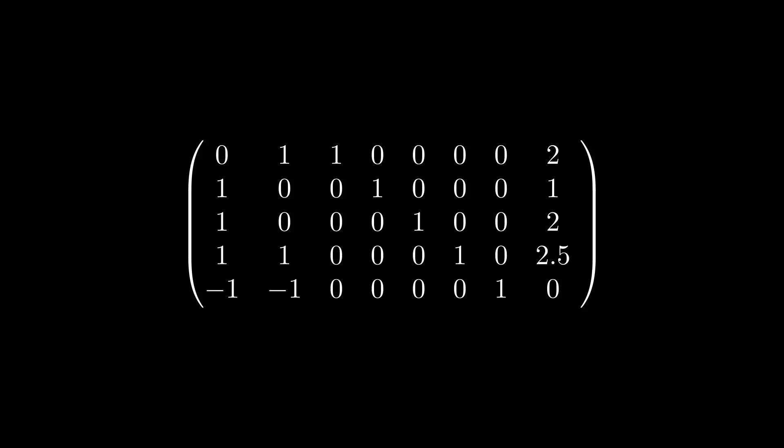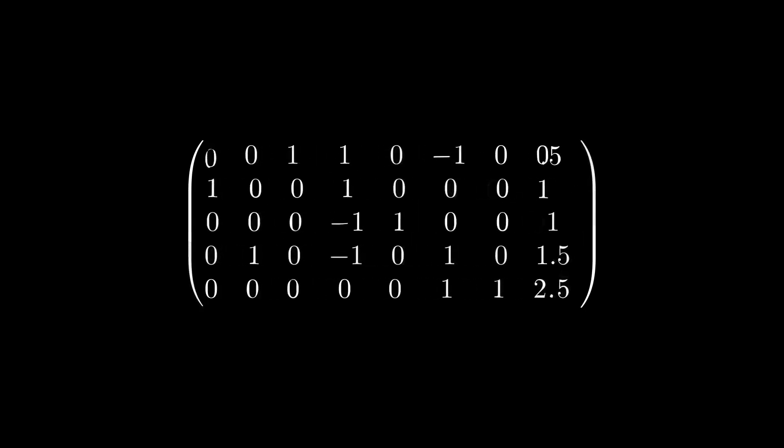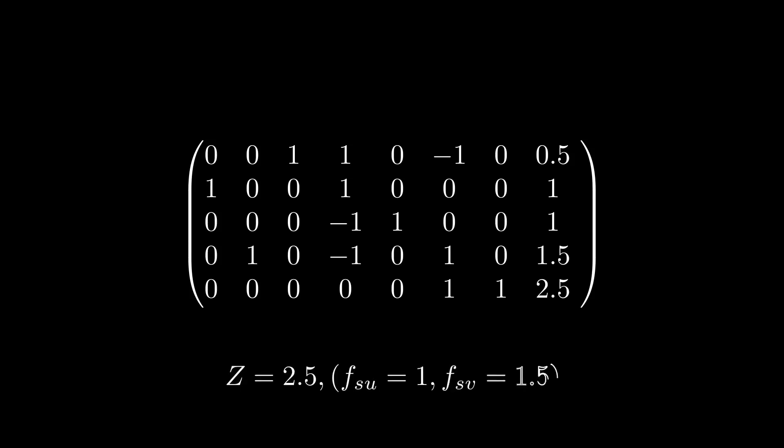Applying the update rule gives us the following. Repeating this process with the new pivot at the fourth row and the second column, we get the following tableau. Since there are no more negative values in the bottom row, we are done. The maximum value of the objective function is simply given by the bottom right element, which is 2.5, the actual max flow.